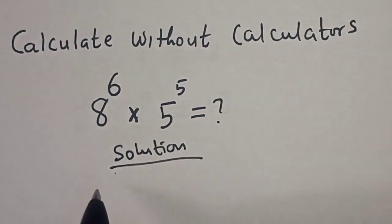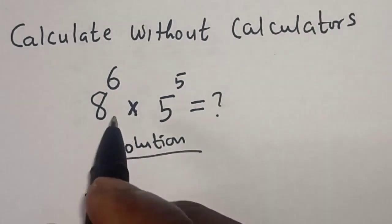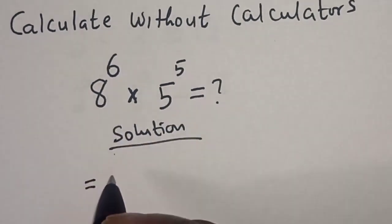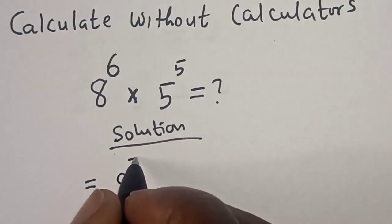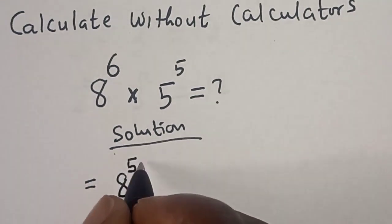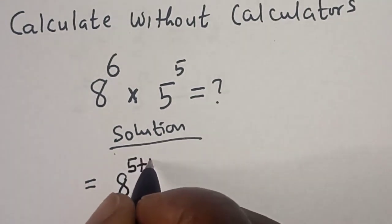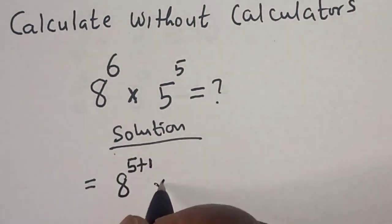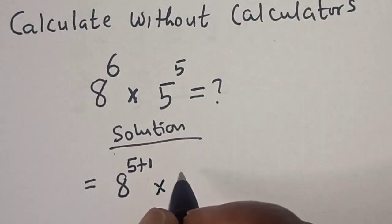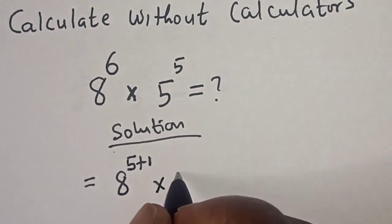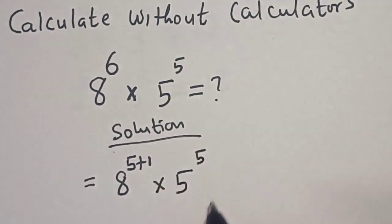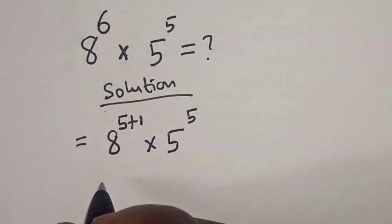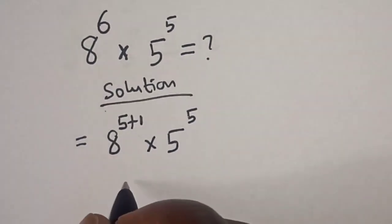We have 8 raised to the power 6, multiplied by 5 raised to the power 5. We rewrite 8 raised to the power 6 as 8 raised to the power of 5 plus 1, multiplied by 5 to the power of 5.